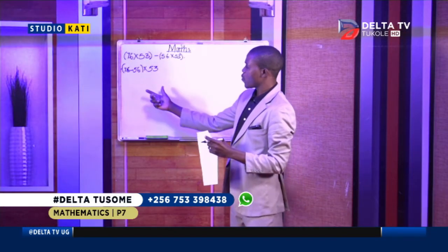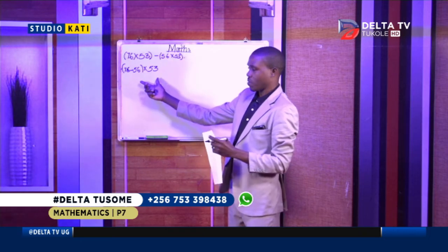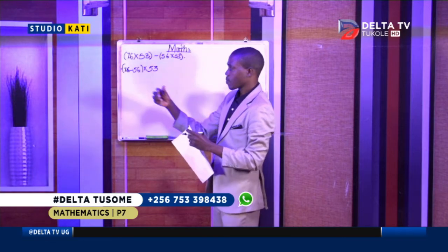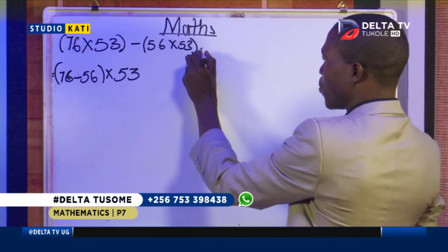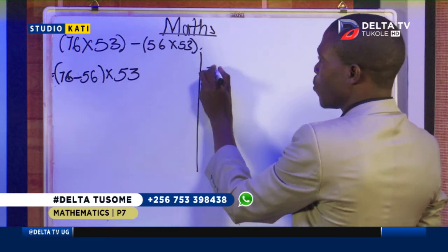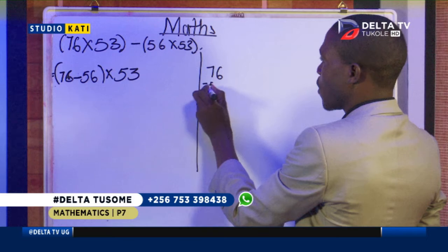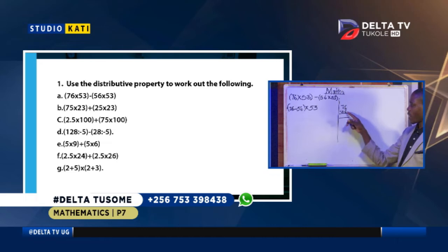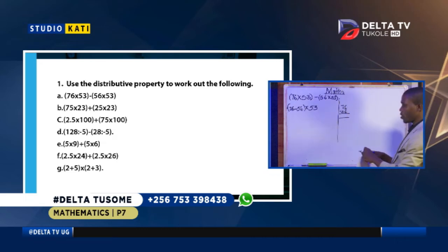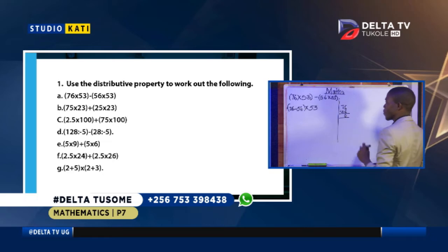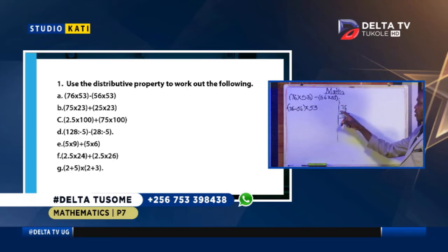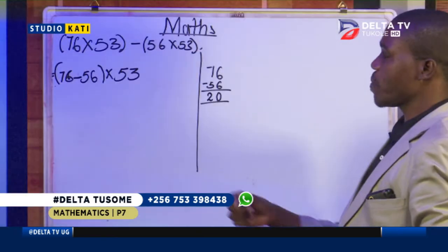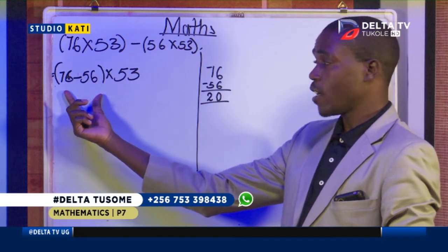By using your eyes and the BODMAS method, you'll find that we have to work out the bracket first. So in the bracket we are required to subtract: go aside and do 76 minus 56. What is 6 minus 6? We shall get 0. What is 7 minus 5? We shall get 2. It means that within this bracket we have got 20.